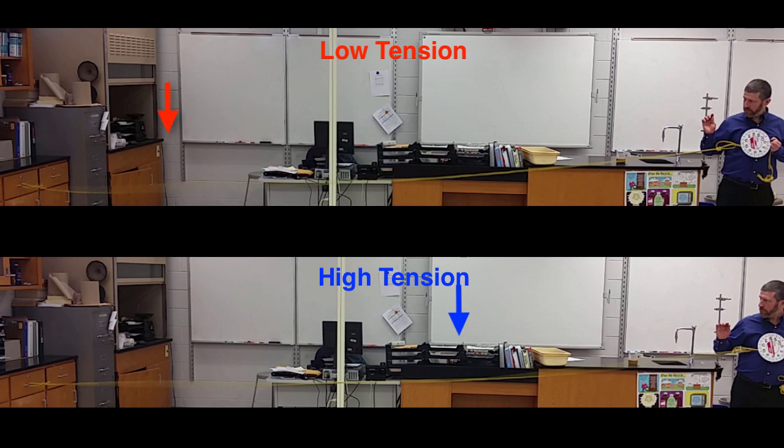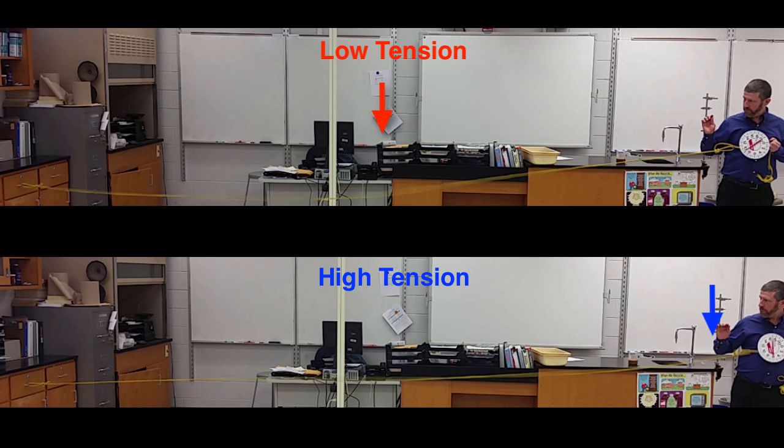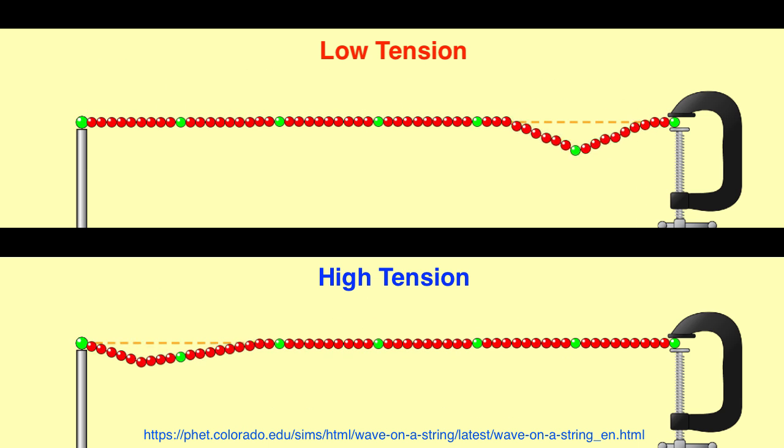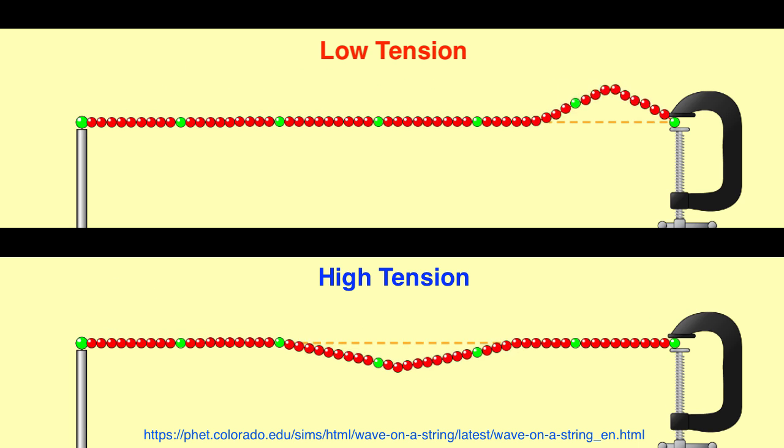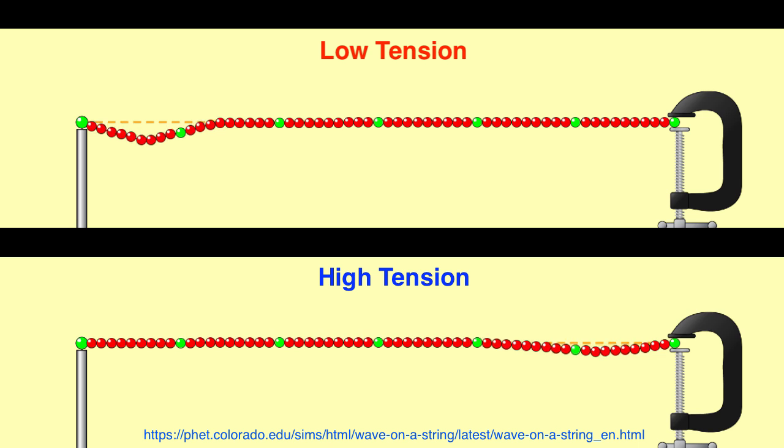You might also notice that when it reflects, it does invert. But nevertheless, it's clear that one of them travels faster than the other. Here's a simulation of that on the PhET.colorado.edu website. You can see very clearly here that one of them has much greater speed.